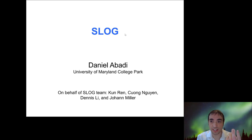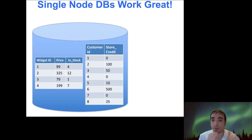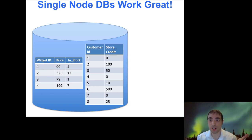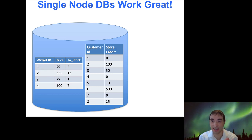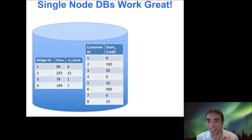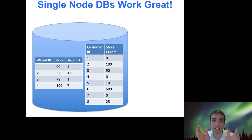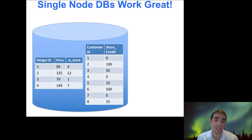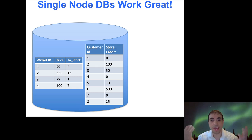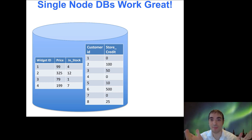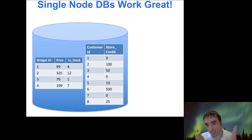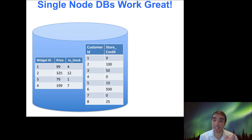Before getting to distributed challenges, Dan reviews how databases work on a single node — the easy case that was figured out about 30 years ago. Using a retail application as an example, the database has two tables: a widget table (things being sold) and a customer table (people buying those widgets). Customers buy widgets with store credit in this application.